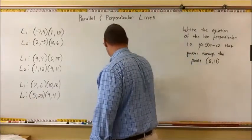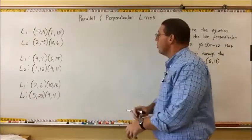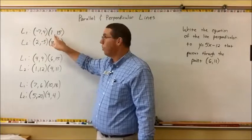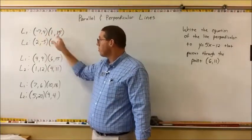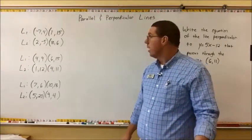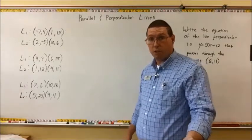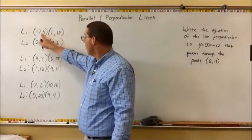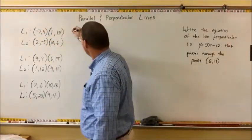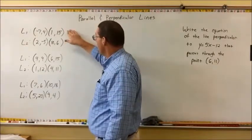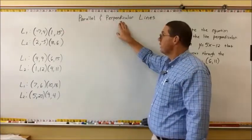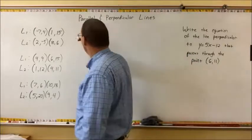A couple of things you may be asked: you might be given two lines, where each line is identified by two points, and asked whether those two lines are parallel, perpendicular, or neither. We need the slope of both lines, which we find using the formula m equals y2 minus y1 over x2 minus x1.